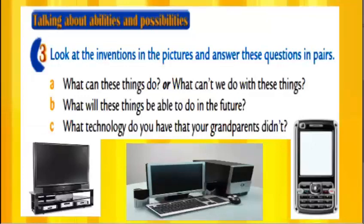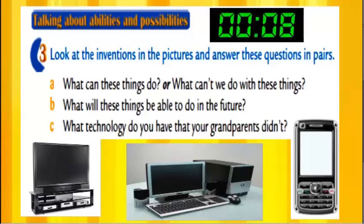Exercise three. Here we have some inventions — some devices or appliances. You have to look at the inventions and answer these questions in pairs. What can these things do, or what can we do with these things? What will these things be able to do in the future? And what technology do you have that your grandparents didn't? Take your time — I'll be back in a minute.